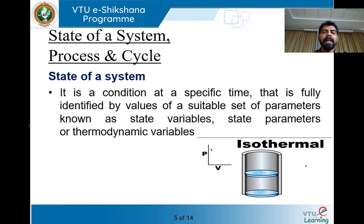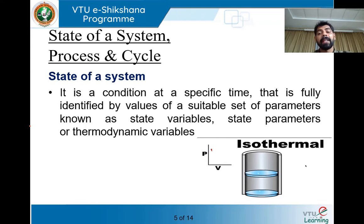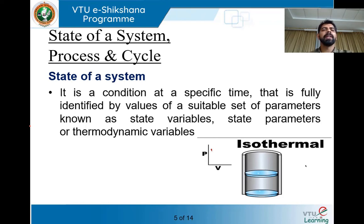In an equilibrium state, everything should be balanced. According to the temperature, the pressure should be maintained; according to the pressure, the volume should be maintained. That is what we call thermodynamic equilibrium. If the temperature changes, the pressure changes, and automatically the volume changes — that is a change in the system. But at any given point of time there cannot be an unbalanced system.